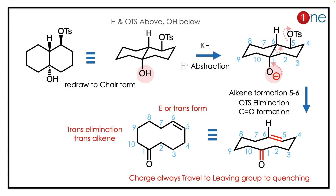Once you abstract the proton, the O⁻ is formed. The O⁻ travels to the 'living room' — the stable site — because charge always travels to that position to quench itself. What really happens is charge migration, leading to alkene formation near the living room.